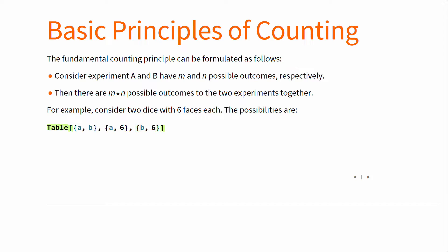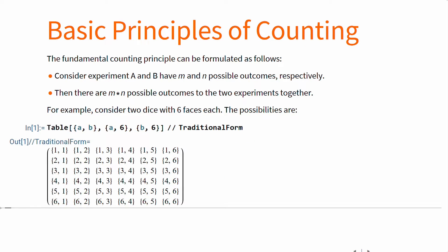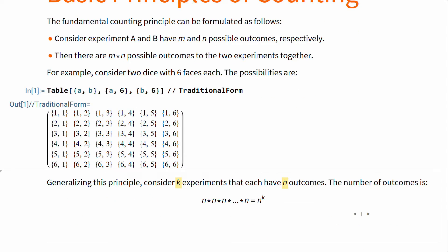Six for the rows, six for the columns. Generalizing the principle, consider k experiments of each n outcomes. The number of outcomes can be calculated by n times n and so on k times, so n power k.